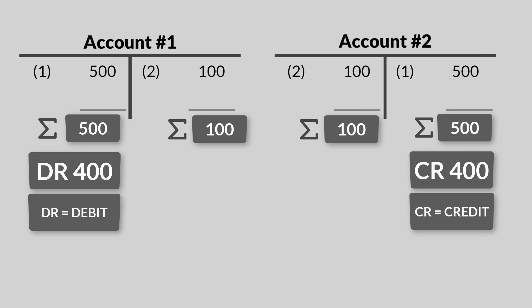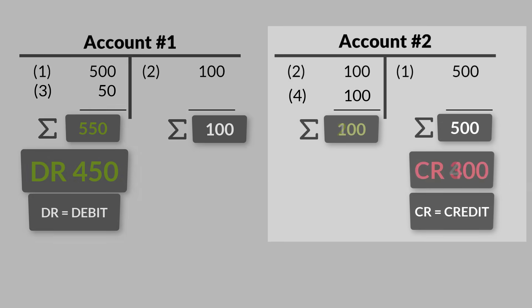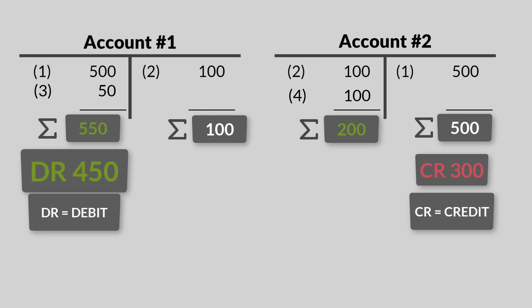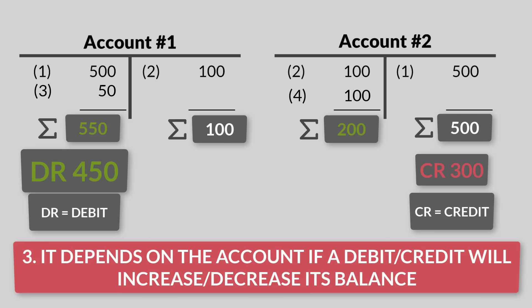Here comes the confusing part. Let's say we have another transaction that adds a debit of 50 to account number one, and one more transaction with a debit of 100 going to account number two — the credits for these go to different accounts. What would happen is that the balance of account number one would increase while the total of account number two decreases. Both received a debit, but one account increases while the other decreases. They are behaving differently — and that's rule number three.